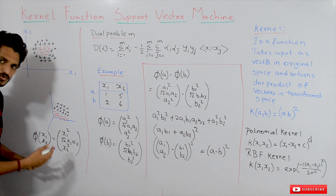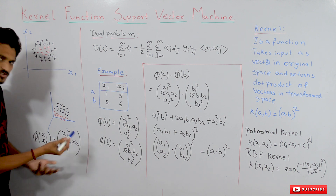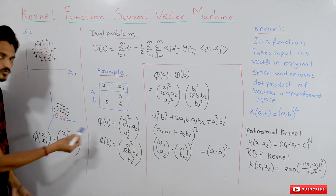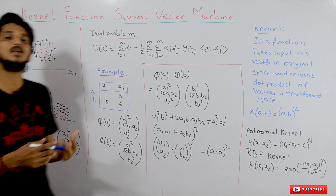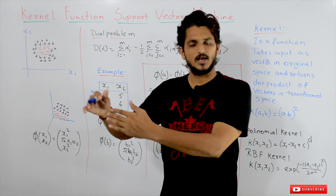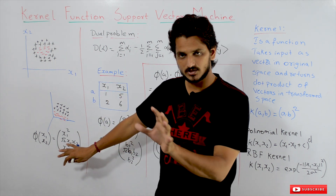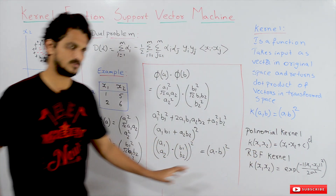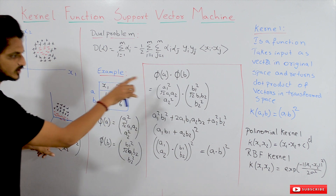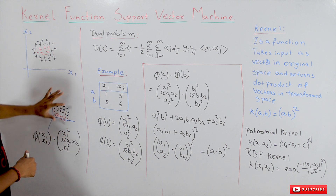Is this the only function we have to use for transforming our data into higher dimensions? No, we can use any function. For example: (x1 cubed, x1 x2, x2 squared) — that's also a function. There are different functions which we can use to transform our data into higher dimensions. Why are we stressing this point? You will understand when we discuss about kernel functions. You can use any function, but why we have chosen this specific function — you will understand when we discuss the concept of kernels.